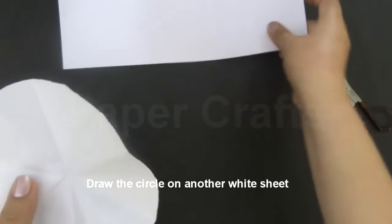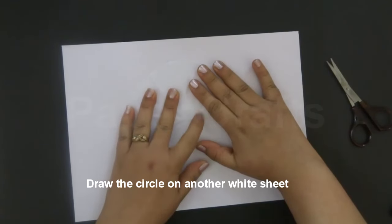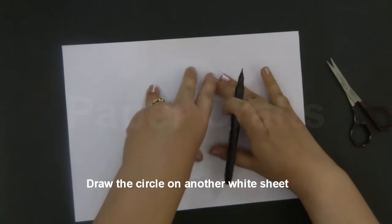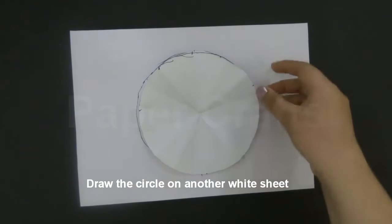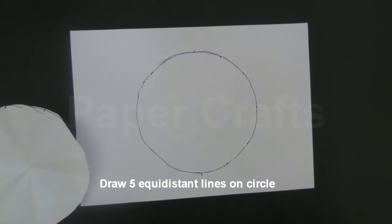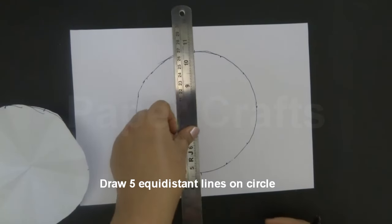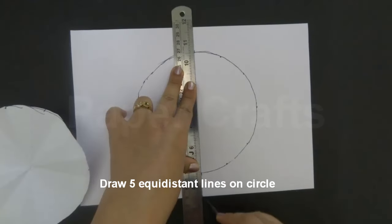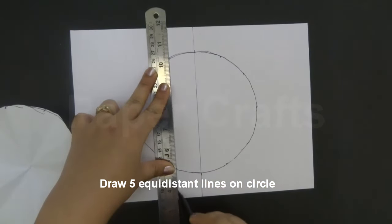Take another white sheet of paper, A4 size. Place the circle over it and draw a circle with the help of a marker. After drawing this circle on this white sheet, we will draw 5 equidistant lines. We will draw a line in the middle of the circle. We will draw 2 lines on both the sides.